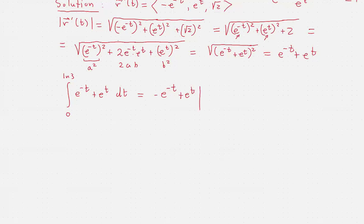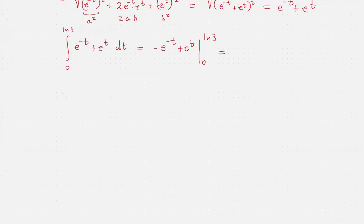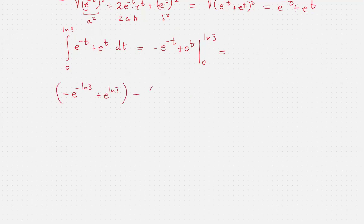We want to go from 0 to ln(3). And finally, we have the very last step where we need to simplify things as much as possible. So we have -e^(-ln(3)) + e^(ln(3)) - e^0 + e^0. And I can put -0 here, but it's the same thing as 0.